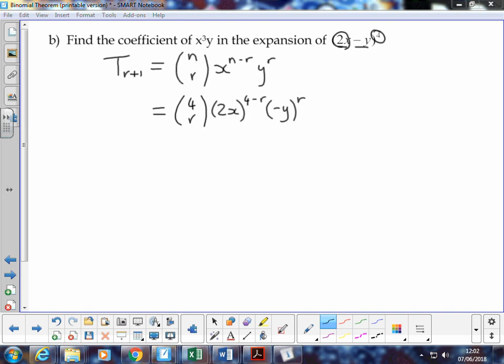We still want to break away these two terms here. We want to break the letters from the numbers, so we can do that by writing down 2x to the power of 4 minus r as 2 to the power of 4 minus r multiplied by x to the power 4 minus r. So we're separating the multiplier from the variable. We can do the same in the second bracket, remembering that this negative y actually means negative 1y. So in that case, we can put negative 1 to the power r and y to the power r.